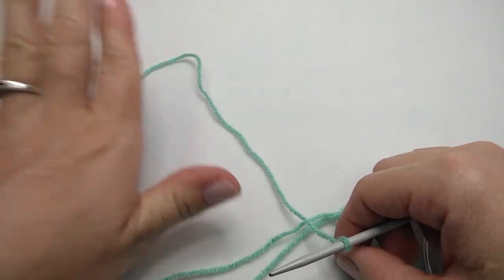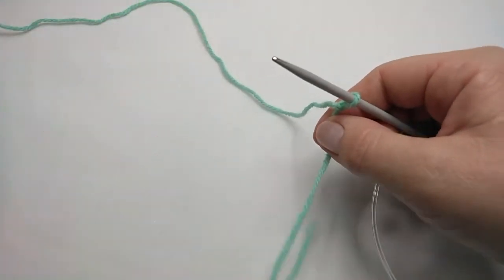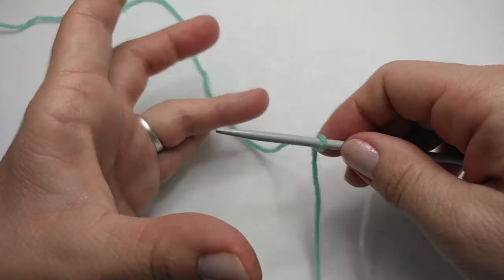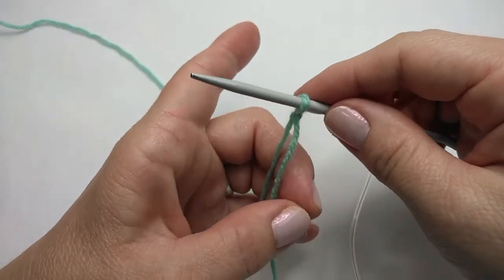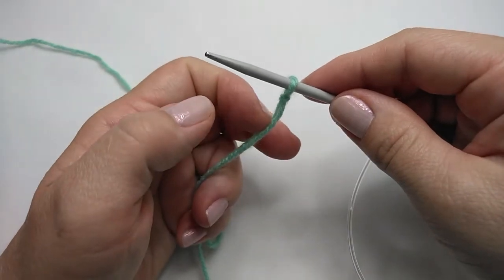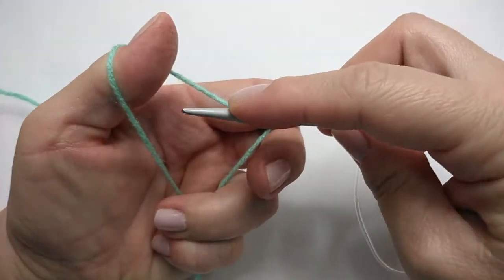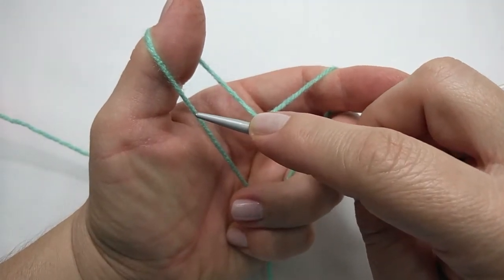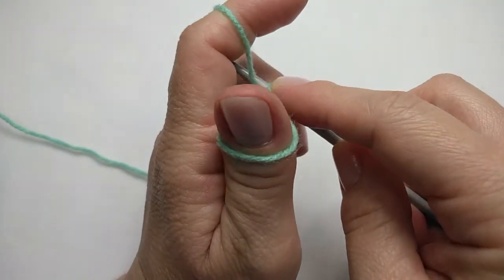So to do the long tail cast on your working yarn which is the yarn coming from your ball should be at the back and your tail end should be towards you. To do the long tail cast on we are going to take our left hand and we are going to grab both strands of yarn with these three fingers. We're going to take our index finger and thumb and split the yarn and we are going to bring this down almost like a slingshot type of idea.